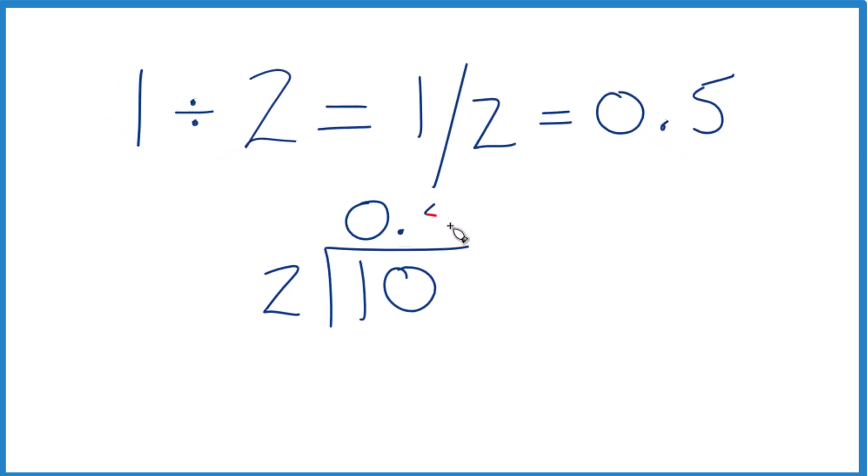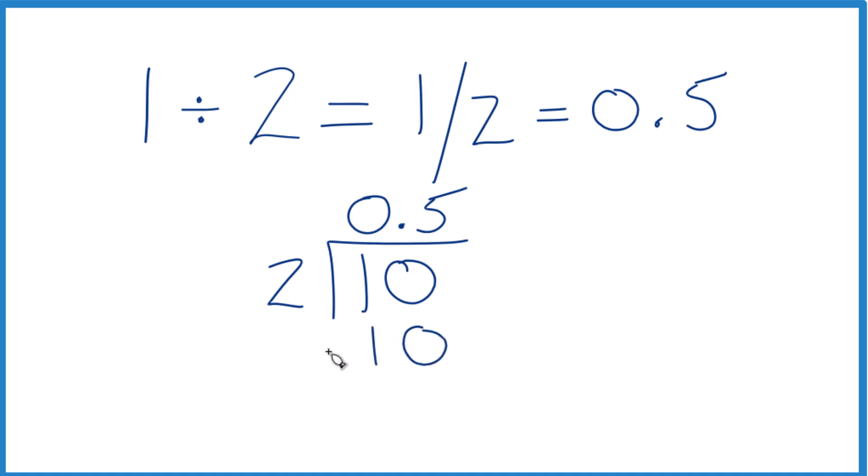Now, 5 times 2 gives us 10, subtract, no remainder. So 1 divided by 2, that gives us 0.5.